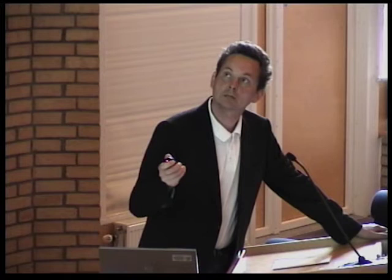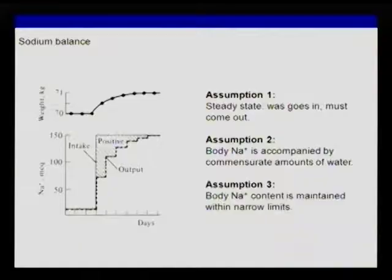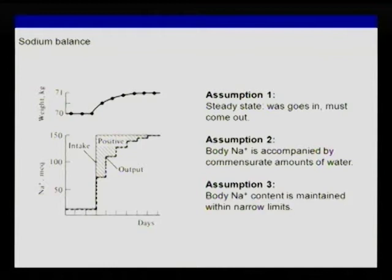What comes in must come out, otherwise you accumulate salt. This subject accumulated 150 millimoles of sodium, or salt, which is nine grams. So his body weight should increase by nine grams, but weird enough, his body weight increased by one kilogram. That's the next assumption: that body sodium is always paralleled by water retention in the body, because serum sodium concentration is 150 millimoles per liter — nine grams of salt, one liter of water.